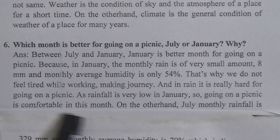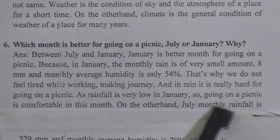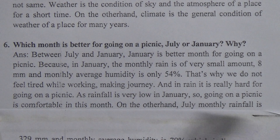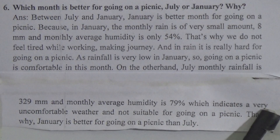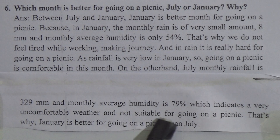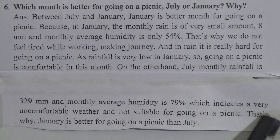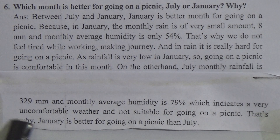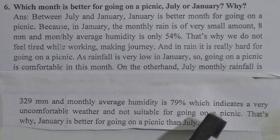Going on a picnic is comfortable in January. On the other hand, July's monthly rainfall is 329 millimeters and monthly average humidity is 79 percent, which indicates very uncomfortable and hot weather — not suitable for going on a picnic. That is why January is better for going on a picnic than July.